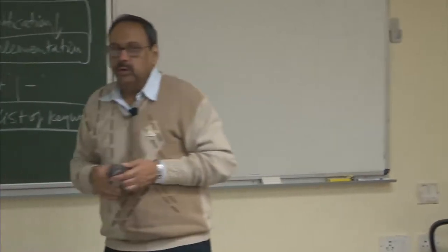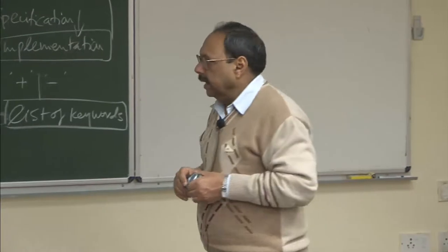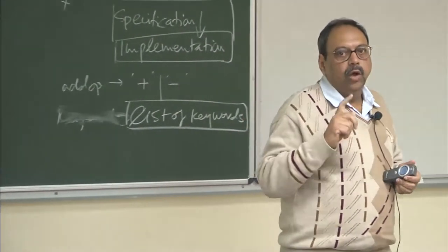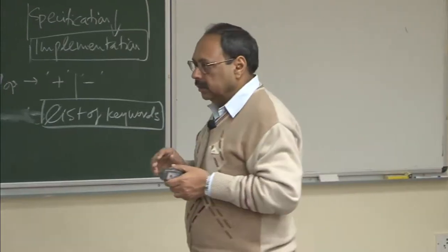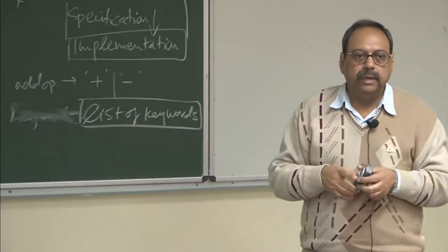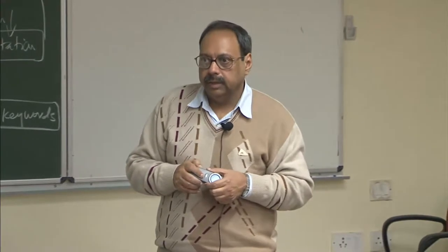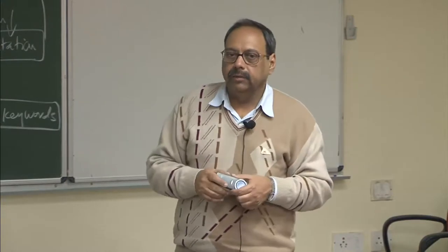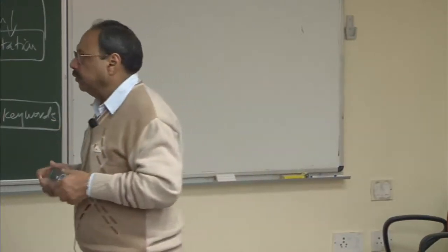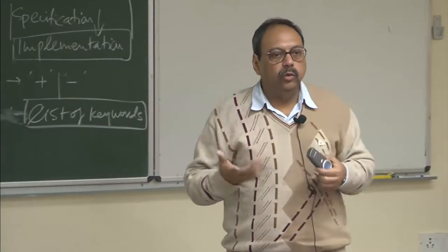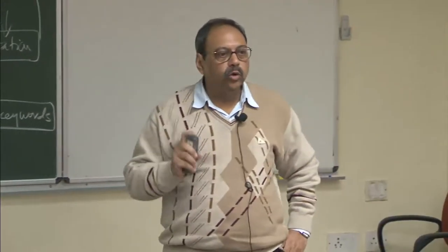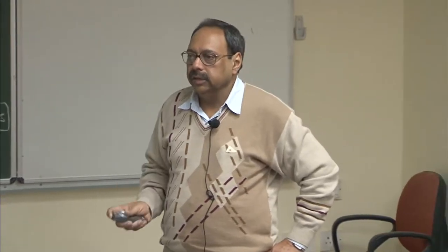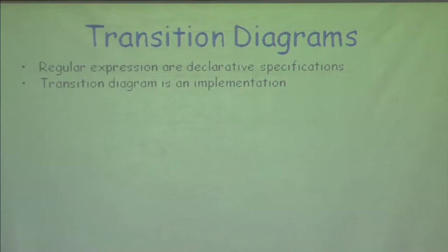Now we want to move slightly away from regular definitions and introduce a new notation called transition diagrams. Remember we said not only do we want to use tools, but somewhere I may want to do a manual implementation — write C code directly for efficiency. When writing C code, I don't want to do it in a haphazard manner. I want some systematic way of specifying what kind of tokens I have. For that I introduce transition diagrams. The regular expressions are declarative specifications, and transition diagrams are really the implementation part.